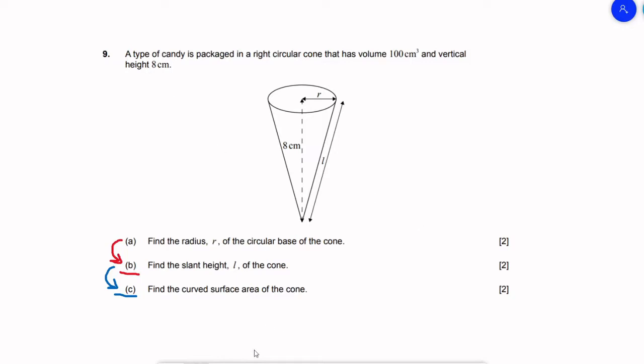This is a perfect example of that. To find the radius R of the circular base of the cone you only need the information that was given to you in the problem. But to find the slant height L of the cone you actually need R, and to find the curved surface area of the cone you actually need L.